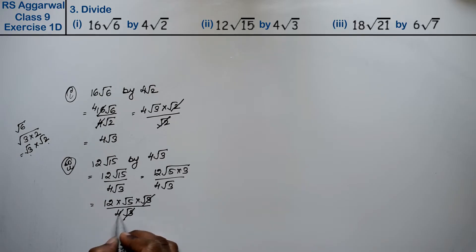√3 cancels with √3. 12 divided by 4 is 3. So 3 times √5 gives us the answer: 3√5.